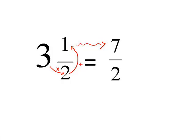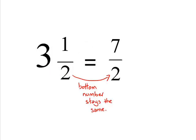To work out the bottom number is really easy because the bottom number just stays the same from the mixed number to the improper fraction. In this case, the bottom number stays as a 2.